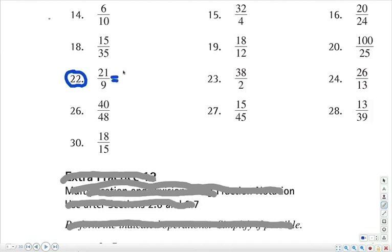Now think about 21. What can you break apart 21 into? I'm thinking 3 times 7, and on the bottom, 9 is 3 times 3. Notice that that top 3 and the bottom 3 can cancel each other out. In other words, 3 divided by 3 is 1, and then it leaves me with 7 thirds.